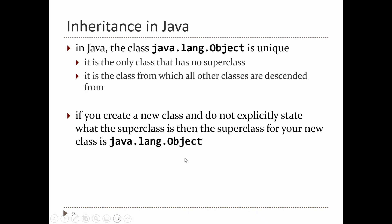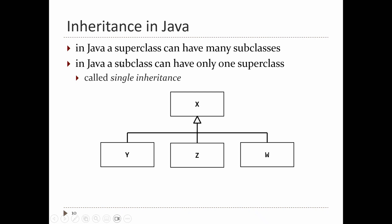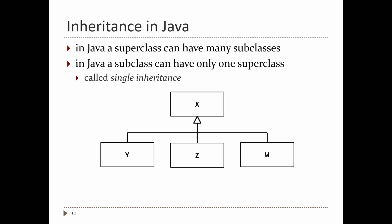Java uses single inheritance: a superclass can have as many subclasses as you want, but any given subclass has exactly one direct superclass. For example, X can have subclasses Y, Z, and W. But for any of those subclasses, it has exactly one direct superclass. This is called single inheritance — a class can only directly descend from one other class.